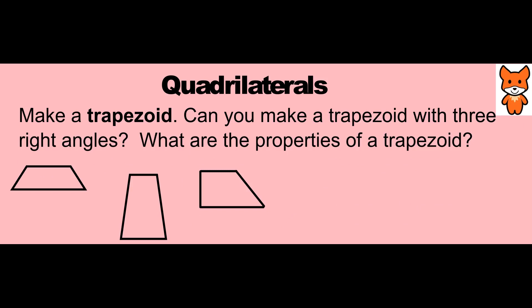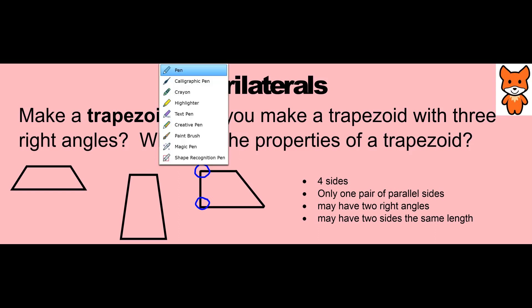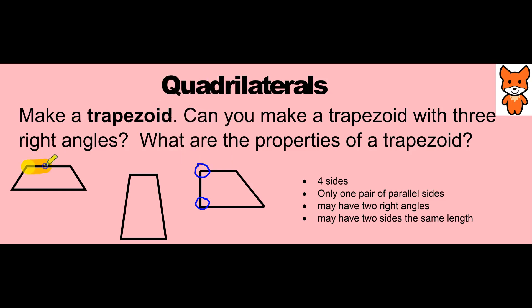Let's think about trapezoids. Can you make a trapezoid with three right angles? The answer is no — this trapezoid has two right angles, here and here. Trapezoids all have four sides, but they only have one pair of parallel sides. This side and this side are parallel. These two are not parallel. On this shape, these sides are not parallel; if these lines were to continue, the lines would eventually cross or intersect.